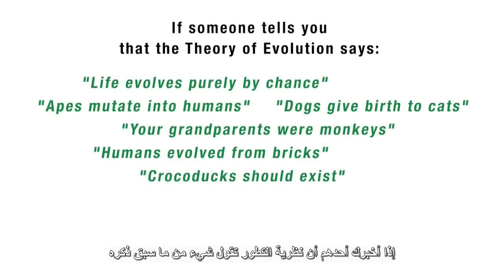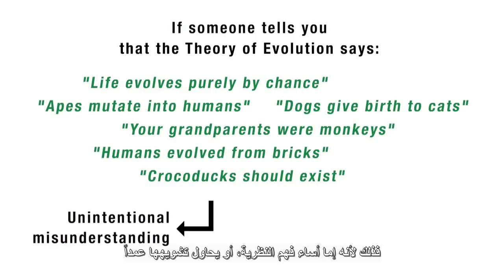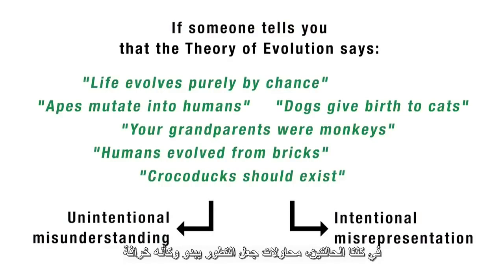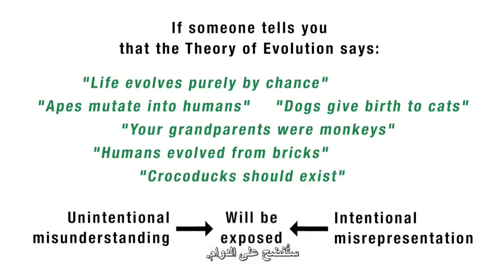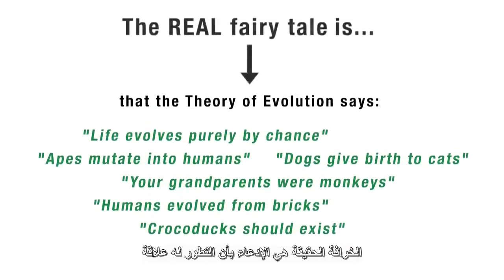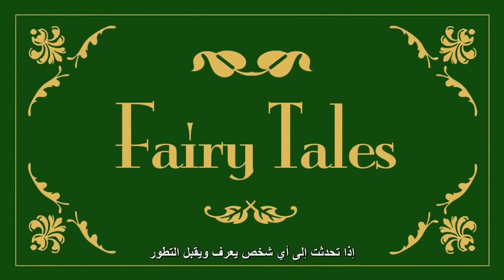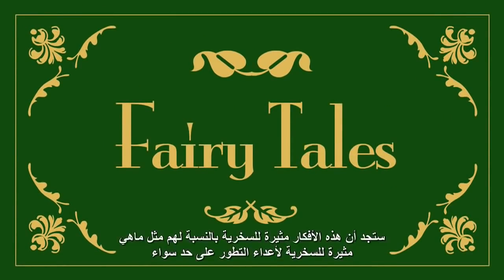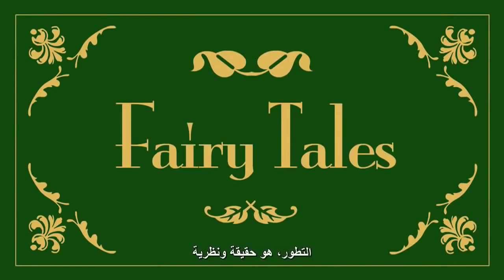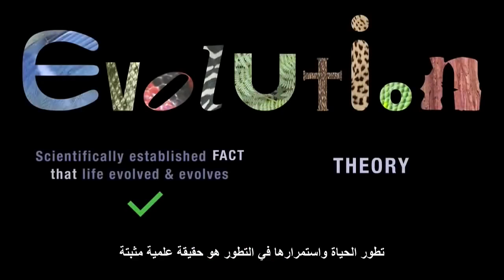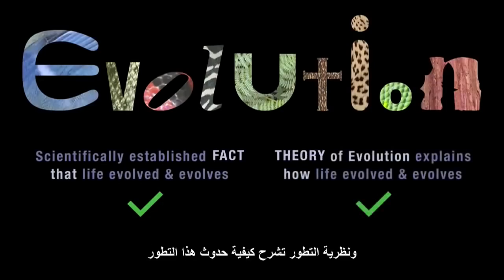If someone tells you that the theory of evolution says any of the following, then they either simply misunderstand it or they're deliberately misrepresenting it and trying to create confusion about science. Either way, attempts to make evolution seem like a fairy tale by both the misinformed and the dishonest will continue to be exposed. The real fairy tale is the claim that evolution has anything to do with dogs giving birth to cats, individual animals morphing into other species, or popping into existence through pure accident. If you speak to anyone who knows about and accepts evolution, you'll find that these ideas are as ridiculous to them as they are to the anti-evolutionist. Evolution is both a fact and a theory — it's a scientifically established fact that life evolved and continues to evolve, and the theory of evolution explains how it does so.